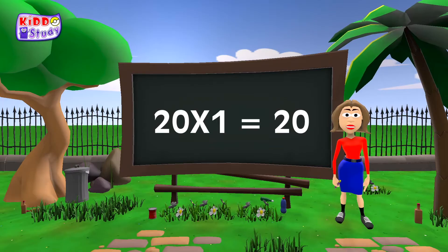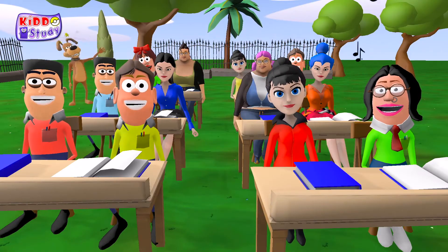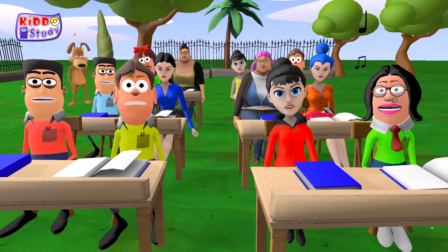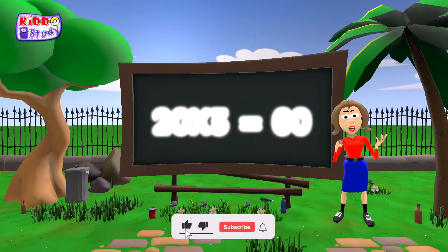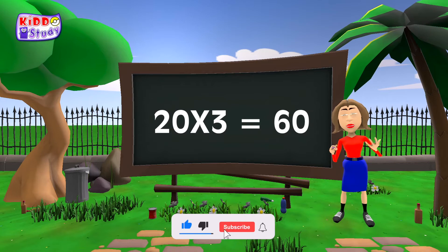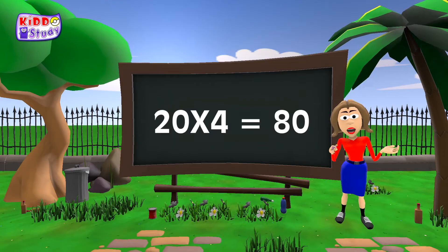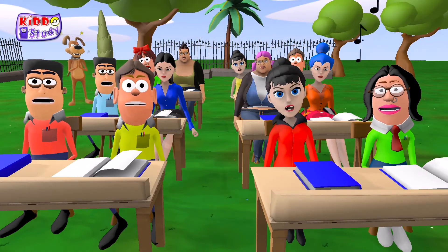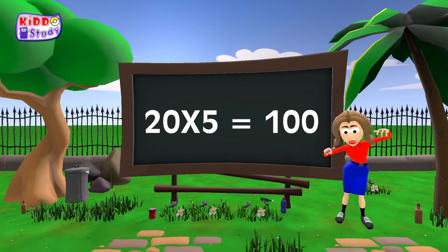20 ones are 20, 20 twos are 40, 20 threes are 60, 20 fours are 80, 20 fives are 100.